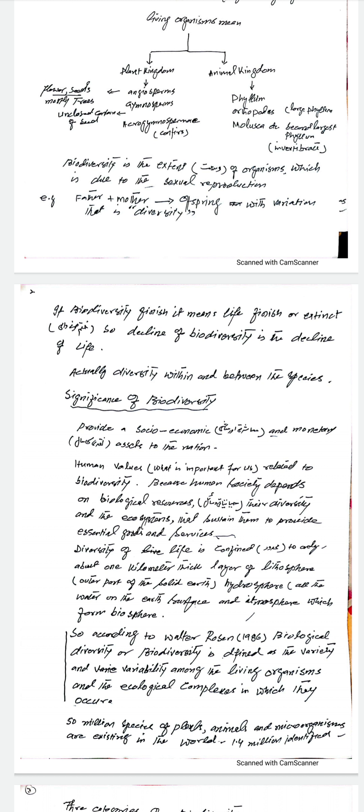According to Walter Ronson, a scientist, biological diversity or biodiversity is defined as the variety and variability among living organisms and the ecological complexes — the variability among living organisms and where they exist. It is estimated that approximately 50 million species of plants, animals, and microorganisms exist in the world, and 1.4 million have been identified to date.